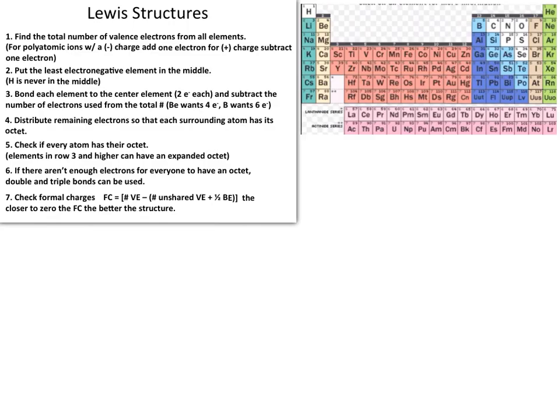What we're going to be covering today is the Lewis structure diagramming procedures. As you can see on the left-hand side, there are a series of steps or rules that you can follow. If you apply these rules each time you create a Lewis structure, you'll get a correct structure. In addition to these rules, you should always have a periodic table.